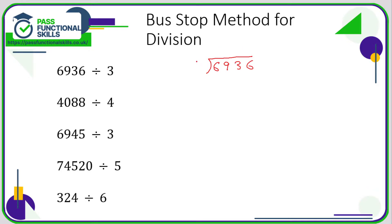The number we're dividing by goes outside the bus stop. Now all we need to do is: 6 divided by 3, 9 divided by 3, 3 divided by 3, 6 divided by 3. This is really easy because every single number inside the bus stop is in the three times table — that's the reason I chose this number. 6 ÷ 3 = 2, 9 ÷ 3 = 3, 3 ÷ 3 = 1, 6 ÷ 3 = 2. So the answer is 2312.